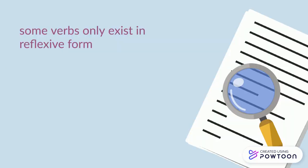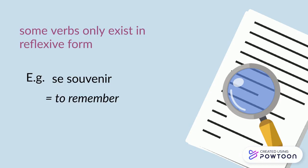Some verbs only exist in the reflexive form. For instance, se souvenir — to remember. There is no verb souvenir; it only exists as se souvenir.